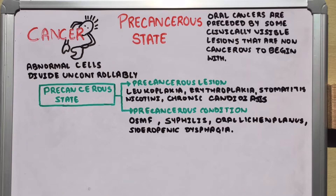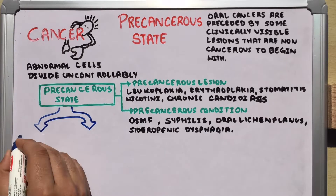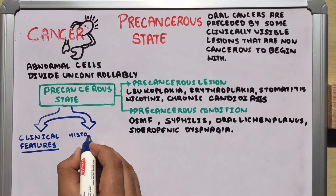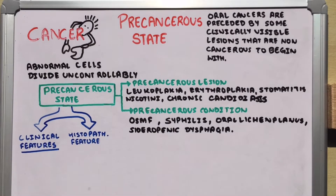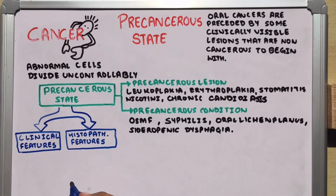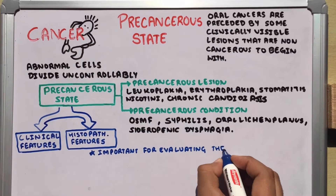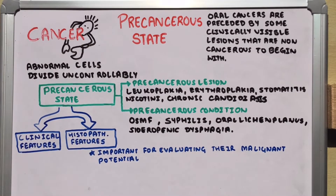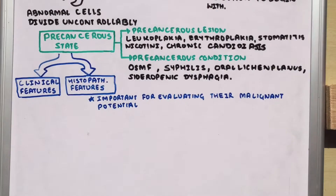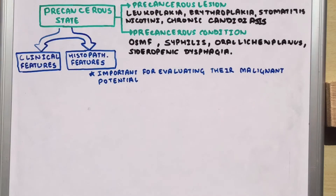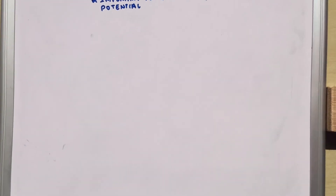It is important to note that all these precancerous lesions and conditions produce a wide variety of clinical and histopathological features, but the most important criterion for evaluating their malignant potential is the microscopic study of epithelial dysplasia. We will understand more about the pathophysiology with an example of malignant transformation.